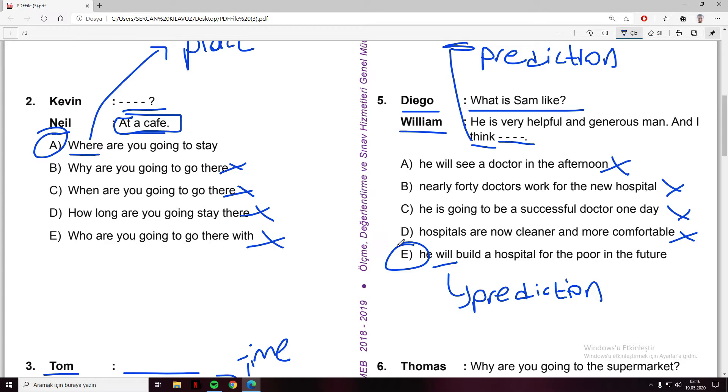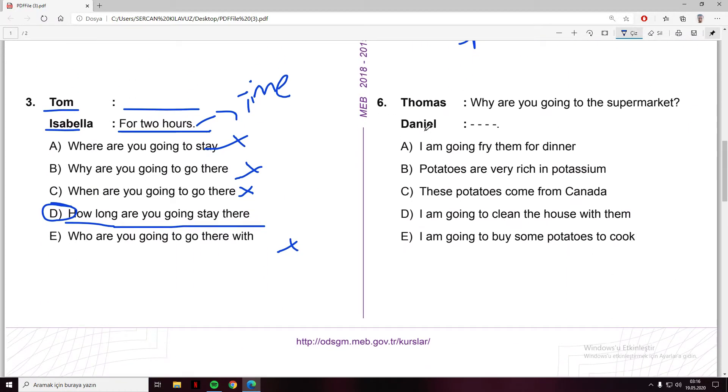Number six: Thomas and Daniel. Why are you going to the supermarket? We need a suitable answer that fits with the question. I'm going to fry them for dinner - no. Potatoes are very rich in potassium - no. These potatoes come from India - no. I'm going to clean the house with them - no. I'm going to buy some potatoes to cook. Why are you going to the supermarket? Because I'm going to buy some potatoes to cook and eat.